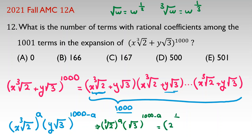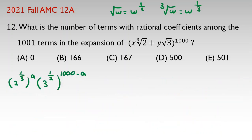And, it will be 2 to the power of 1 over 3 cube root of 2 to the a, square root of 3 is 3 to the power of 1 over 2, 1000 minus a. By power rule, we can say a to the power of n equal to a to the power of mn.